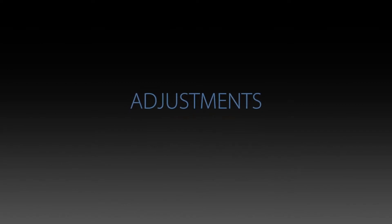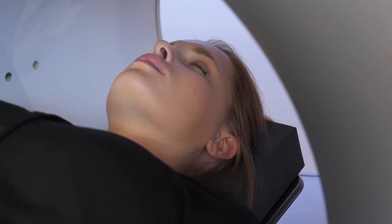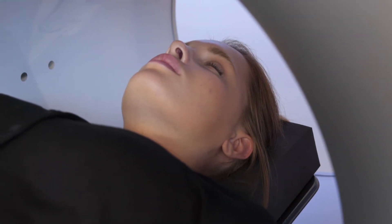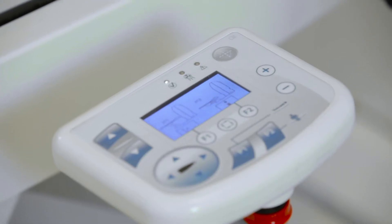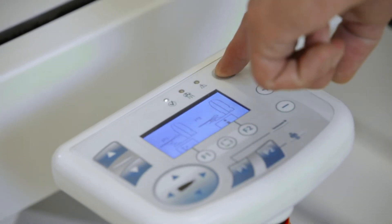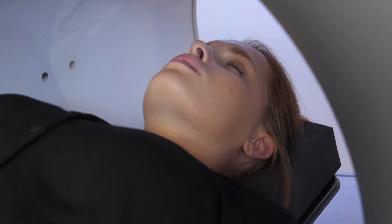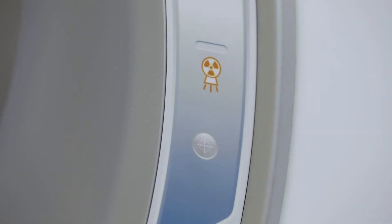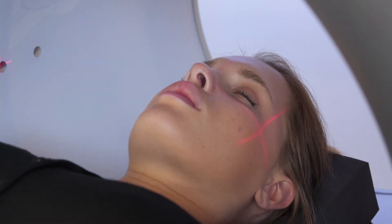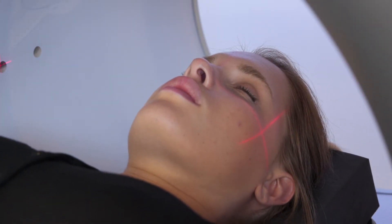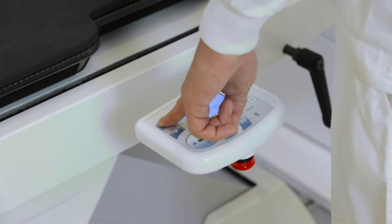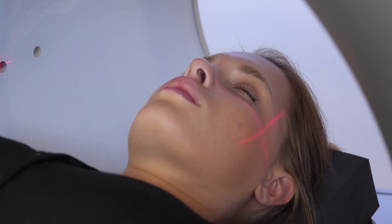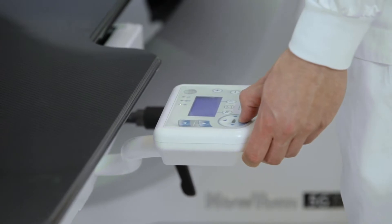For precision adjustments, the laser centering device can be used. To activate it, press the laser key on the control console. It is necessary to have started the NNT software or use the keypads on the sides of the scanning unit. Perform a fine adjustment of the patient's position using the movement control keys: up, down, left, right.